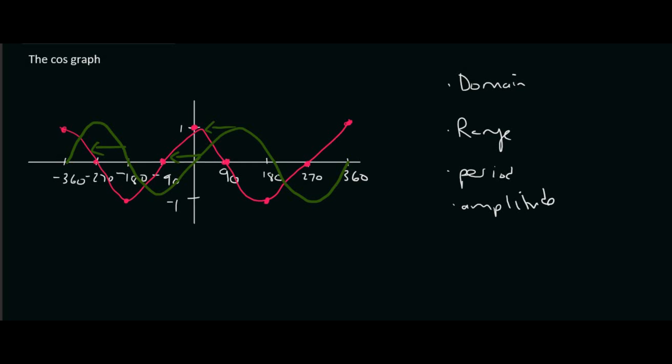Oh and by the way, just remember that it's the pink graph that is the cos graph and this is a normal cos graph. We can add numbers in the front and at the end, but that will come in later videos. So this is just a normal cos graph.